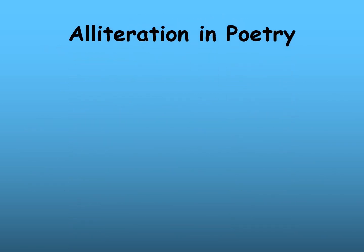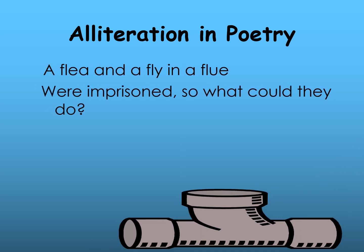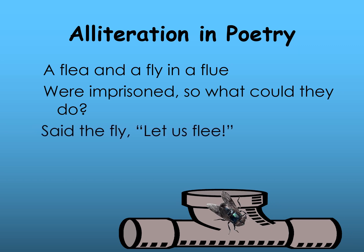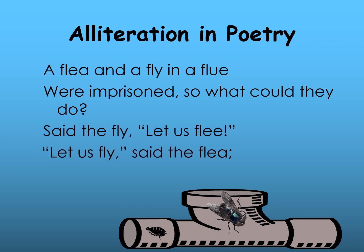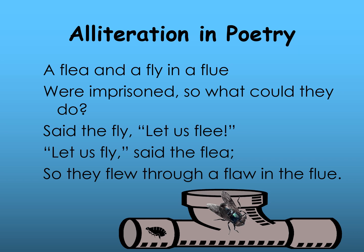What about alliteration in poetry? 'A flea and a fly in a flute were in prison, so what could they do? Said the fly, let us flee. Let us fly, said the flea, so they flew through a flow in the flue.' In the first verse we have 'flea,' 'fly,' 'flew' — the poet repeats the consonant F. In the second verse there is alliteration in 'where' and 'what.' The third and fourth lines have 'fly' and 'flee,' and the last line has 'flew,' 'flow,' 'flue.'